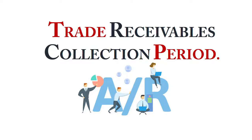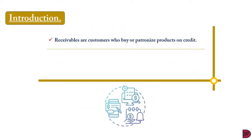When a sale is made on cash, where you debit the cash or the bank and credit the inventory, there is no problem. We are looking at when the sale is made on credit and receivables come in. Receivables are customers who buy goods or patronize services of the business on credit — that is, to pay later. In this lecture, we are looking at trade receivables, and there can be many types of receivables.